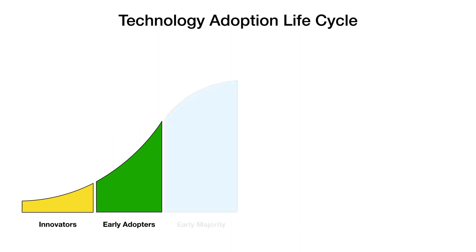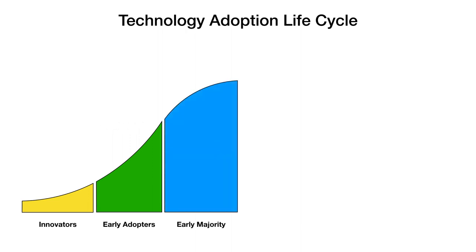Next we have the early majority — the pragmatists. These are the people that see a practical application, a way that they can save time, save money, and make their business or personal life better. They're very pragmatic about it.